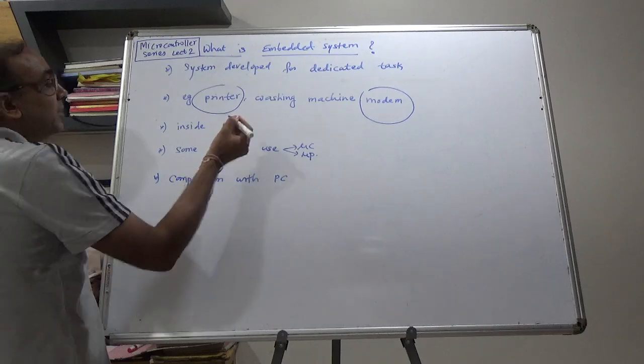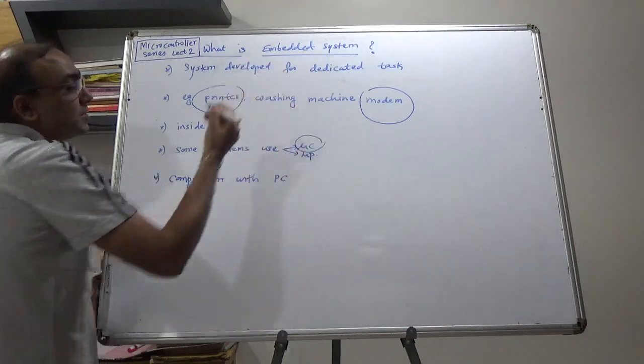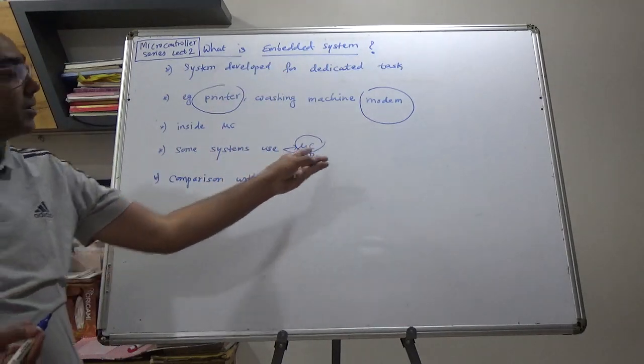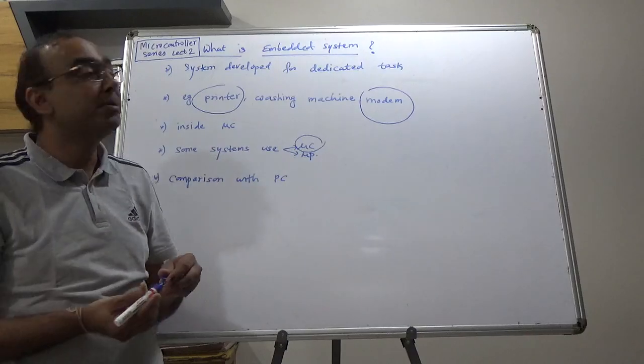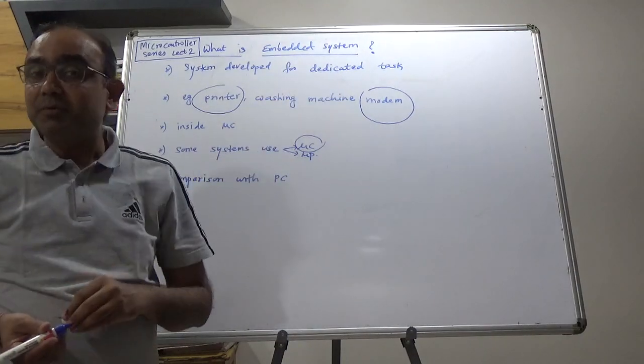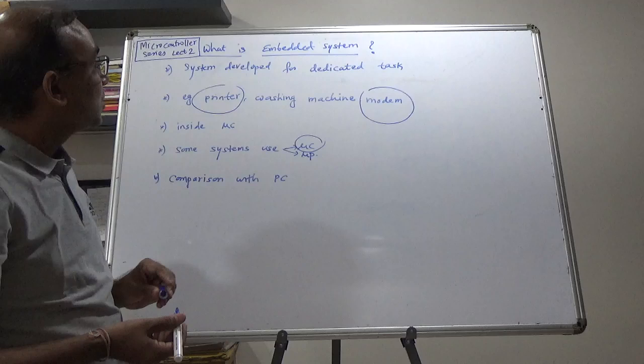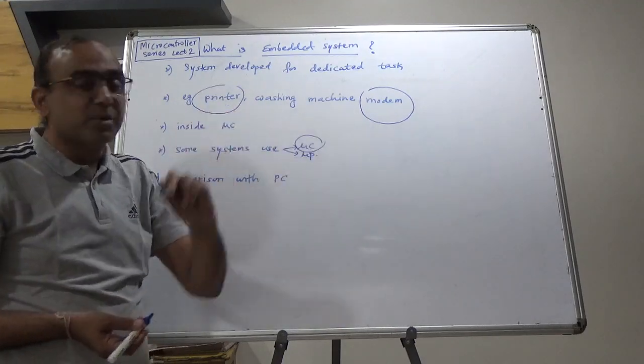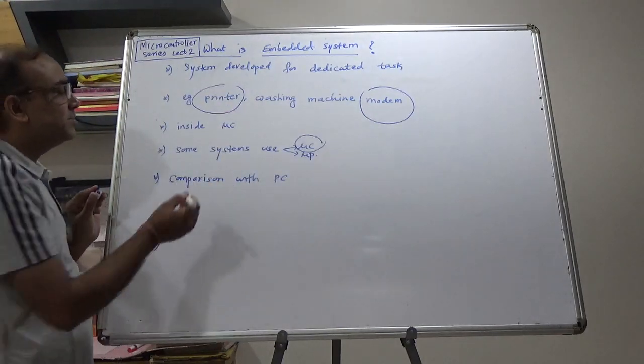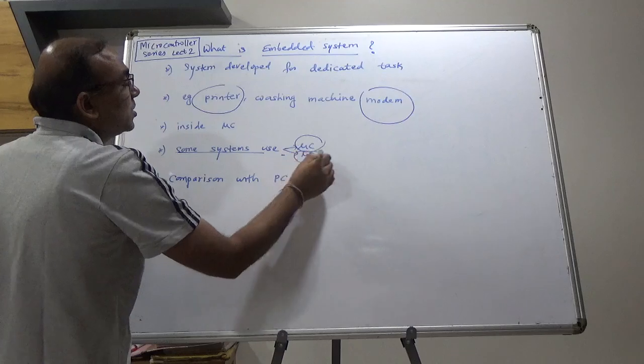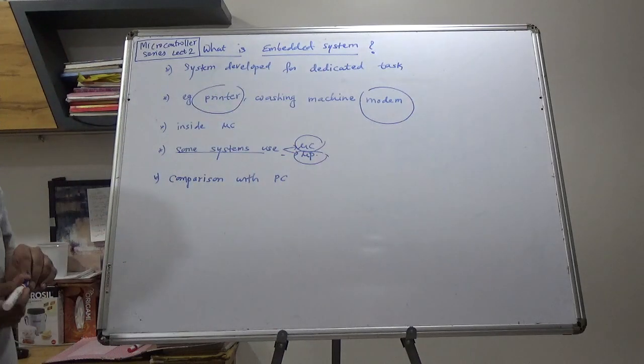Those all have internally mostly microcontrollers. In your mouse there may be a microcontroller. In your keyboard there will be a microcontroller. In your washing machine there will be a microcontroller. So, the brain of that system will be a microcontroller most of the times. Sometimes, some systems can use microprocessors as well.